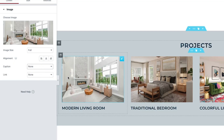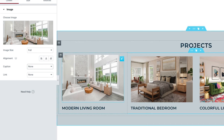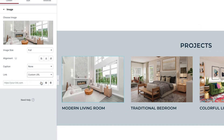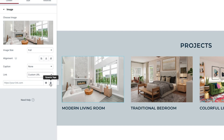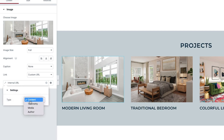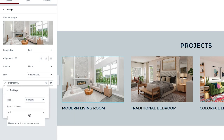Let's say I wanted to link this image to another page. Instead of adding my link where it says custom URL, I'm going to click on this icon. Then I'll select internal URL, click on that, hit content, then search for my page in here.